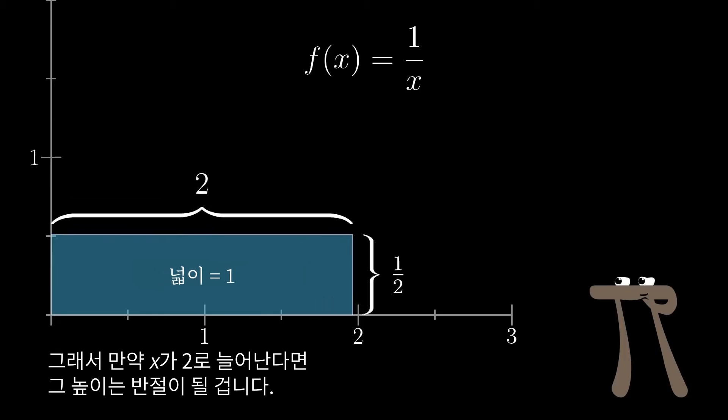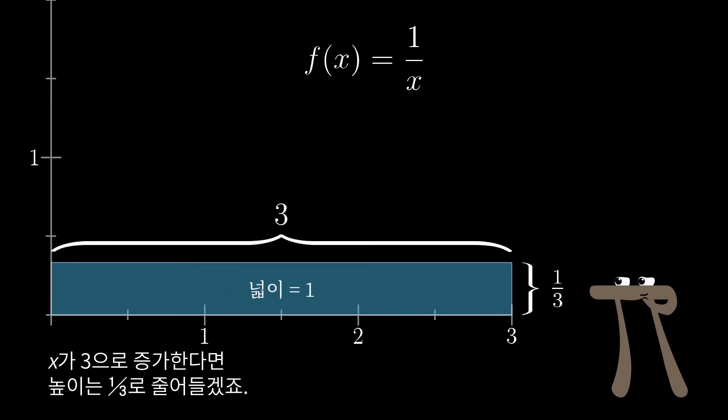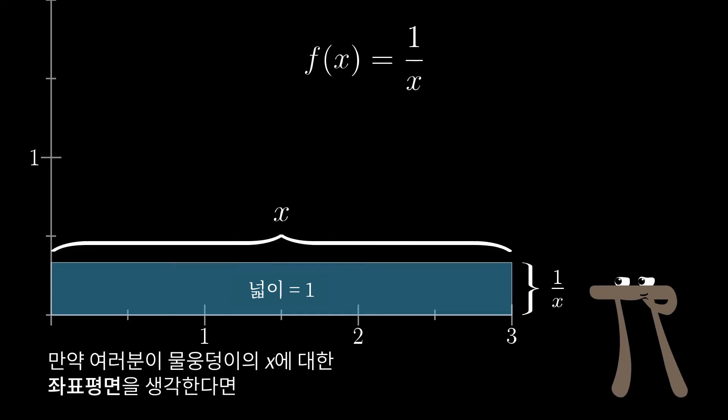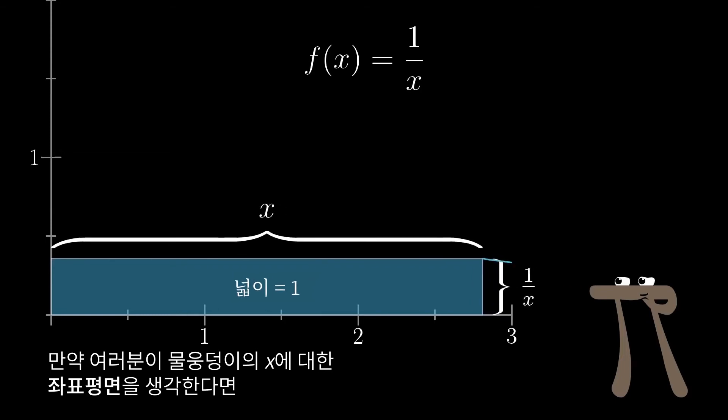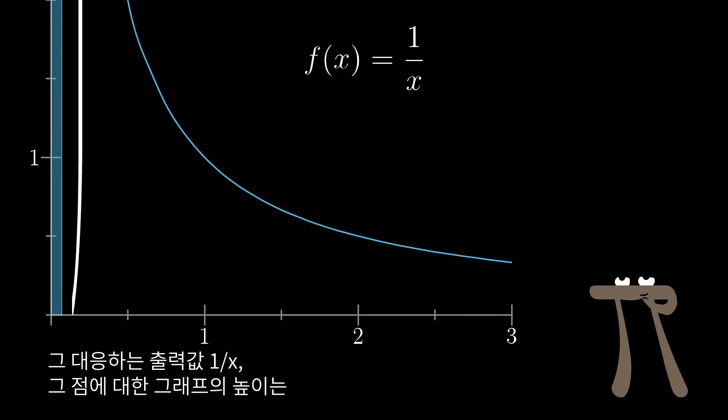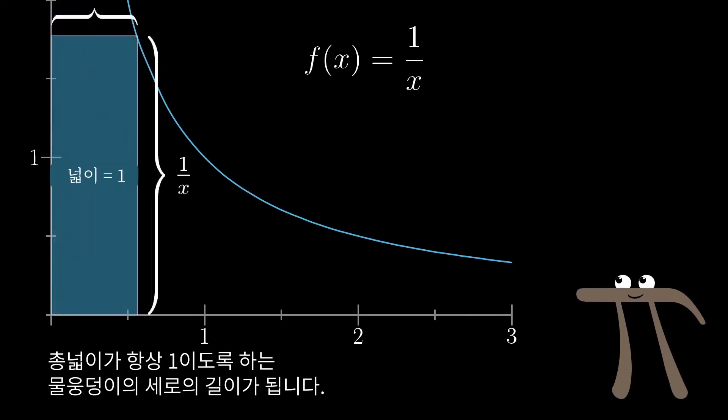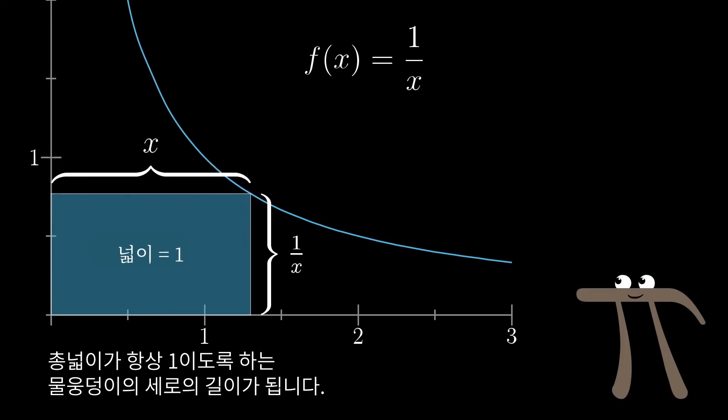So, if x was stretched out to 2, then that height is forced down to 1 half, and if you increased x up to 3, then the other side has to be squished down to 1 third. This is a nice way to think about the graph of 1 over x, by the way. If you think of this width x of the puddle as being in the xy plane, then that corresponding output, 1 divided by x, the height of the graph above that point, is whatever the height of your puddle has to be to maintain an area of 1.